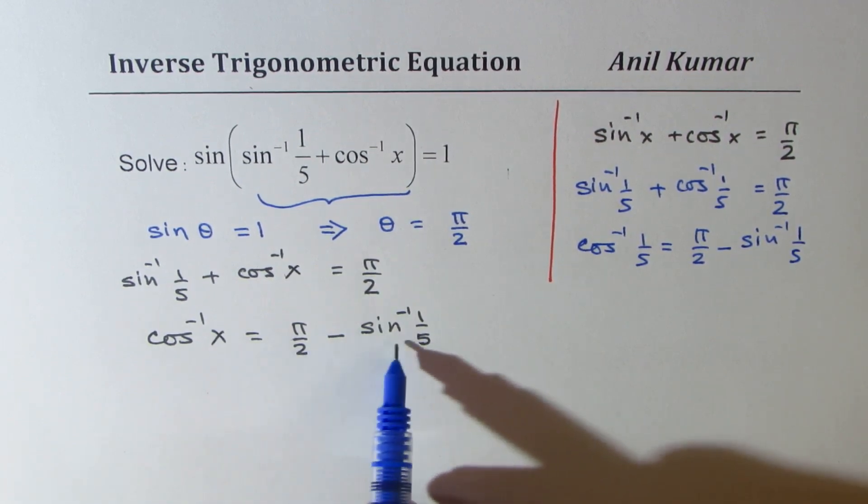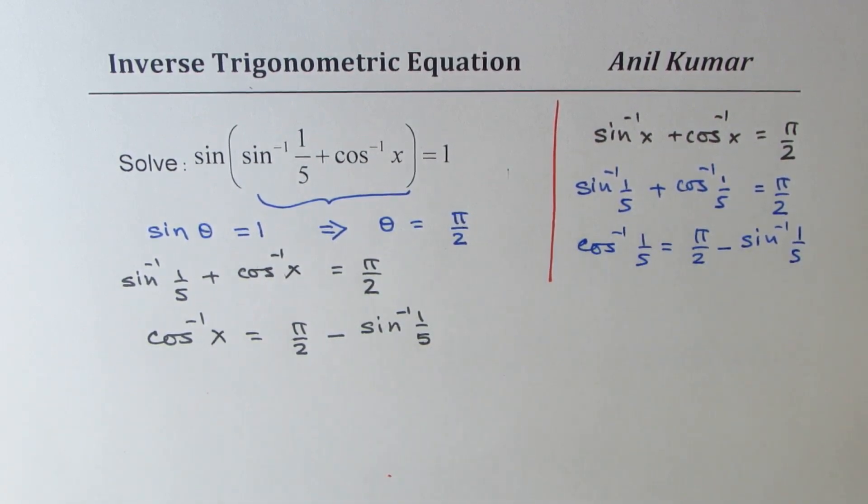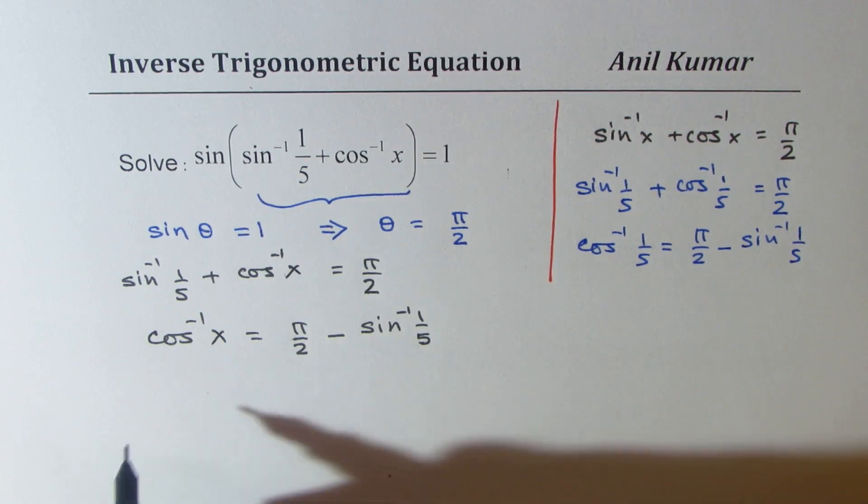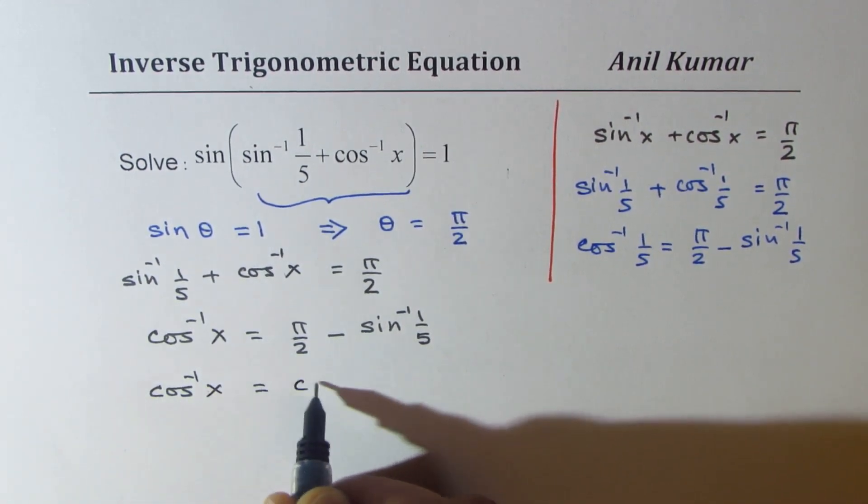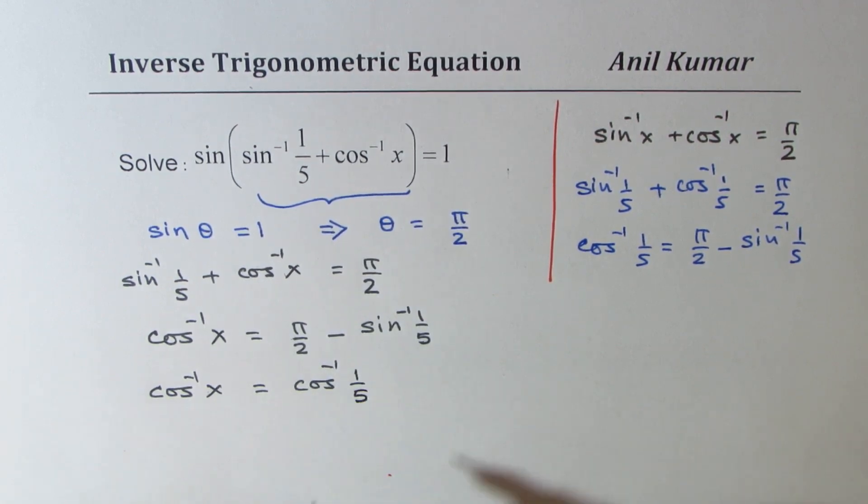So this right side is actually cos inverse 1 over 5, so we can write this as cos inverse x equal to cos inverse 1 over 5.